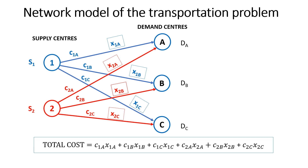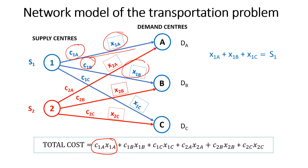The total cost, supposing that all the routes are being used, is the sum of all route costs. For example, if the cost per unit on the route from one to A is C1A and X1A units are being shipped, then the total cost of using that route is C1A times X1A — cost per unit times the number of units. The total cost is then this full sum, which becomes our objective function.